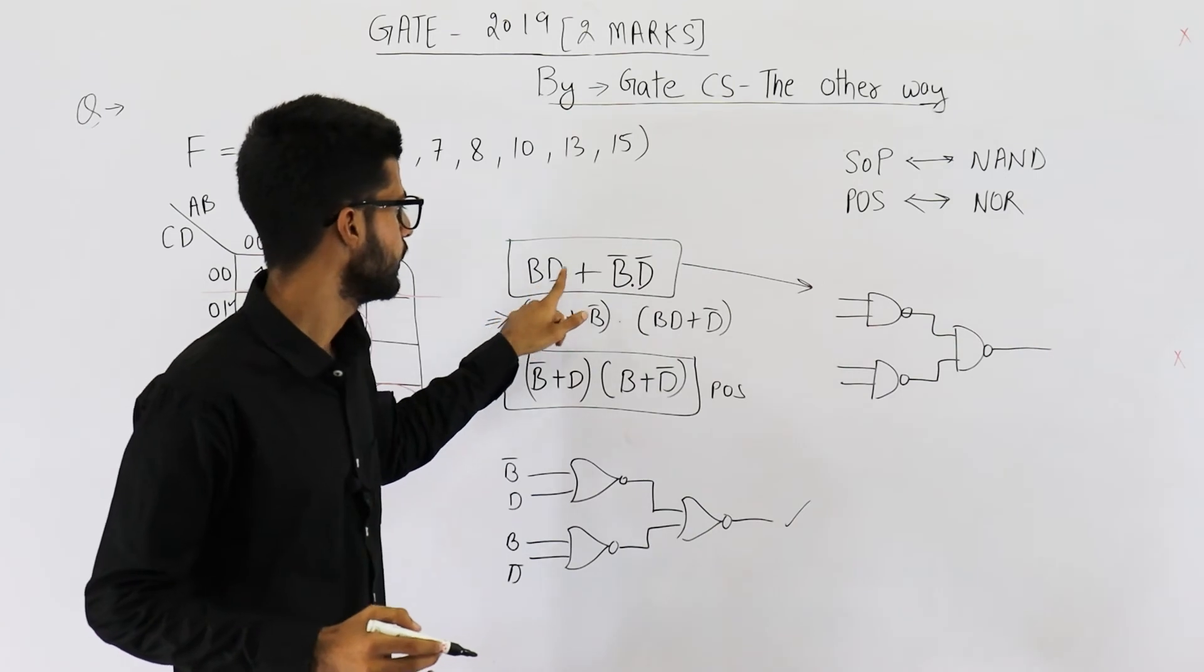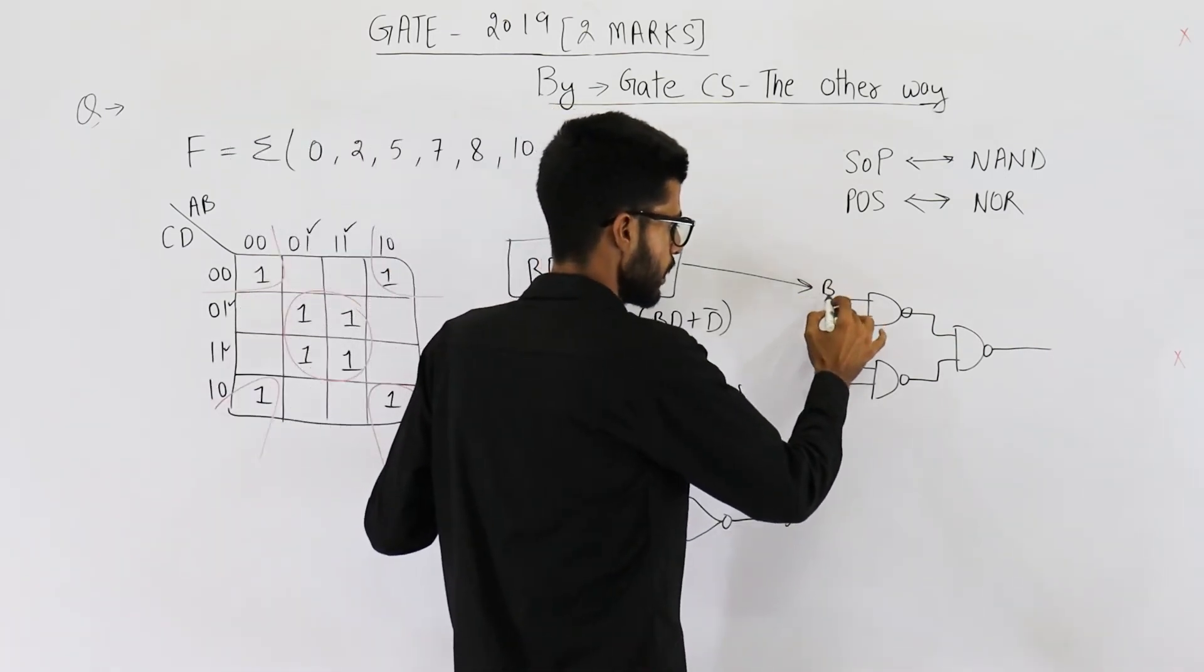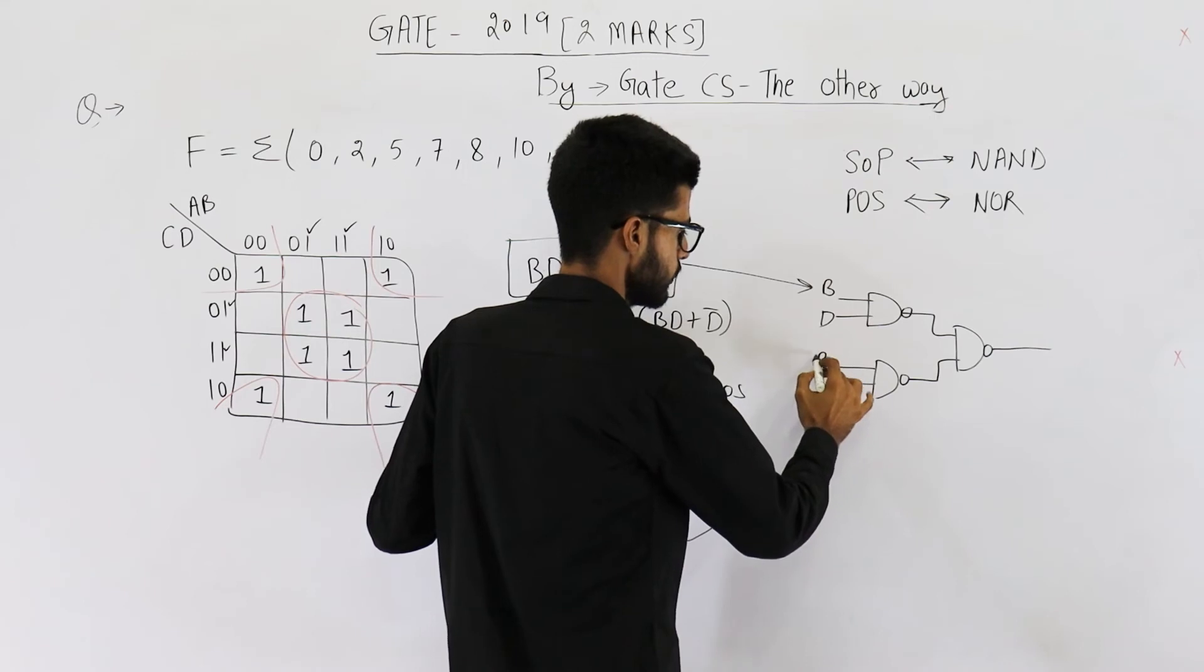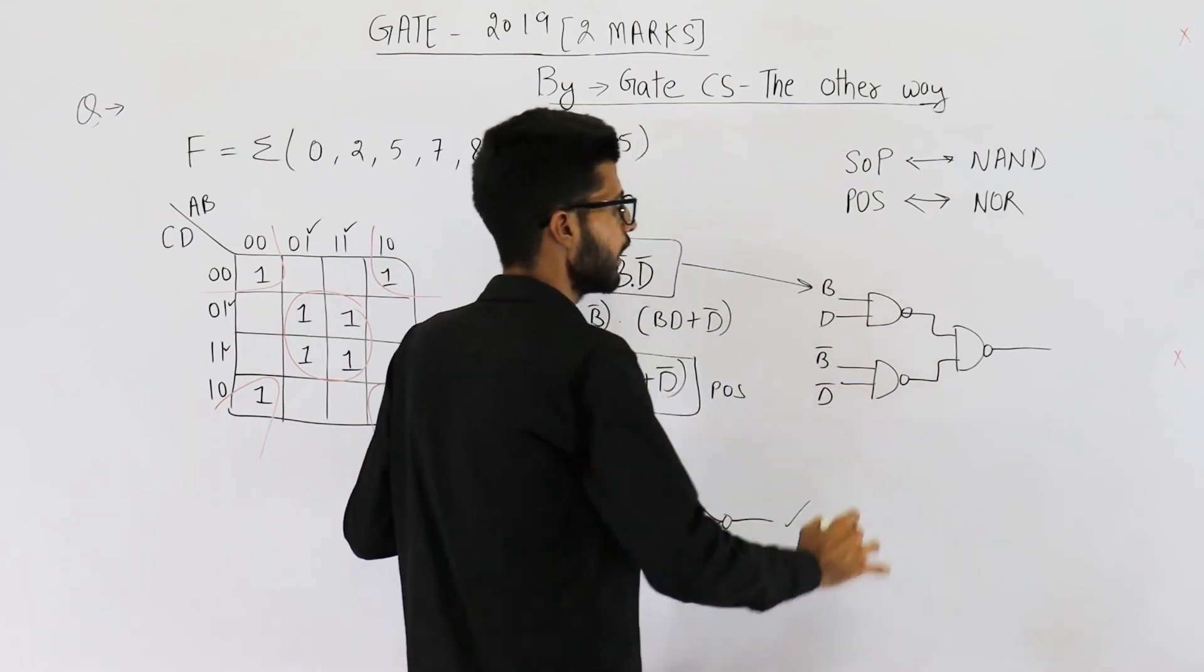So BD plus B bar D bar, that means these two are BD and these two are B bar and D bar.